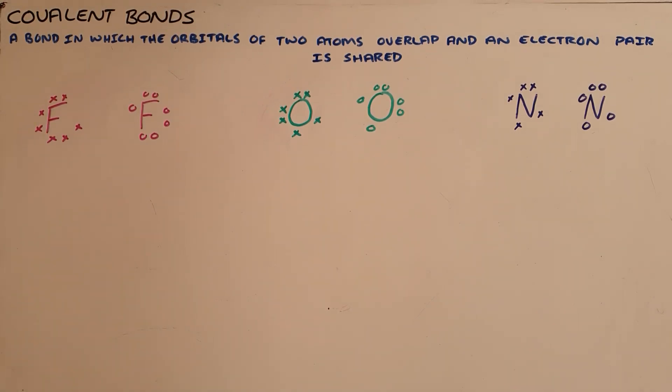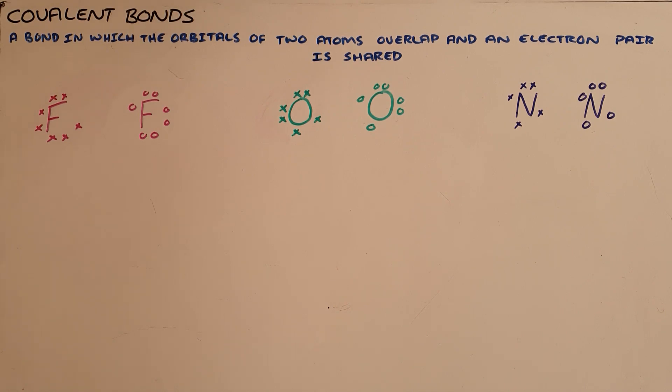A covalent bond is a bond in which the orbitals of two atoms overlap and an electron pair is shared. We know that atoms form bonds so as to obtain a full valence shell, because when their valence shell is not full they are unstable.